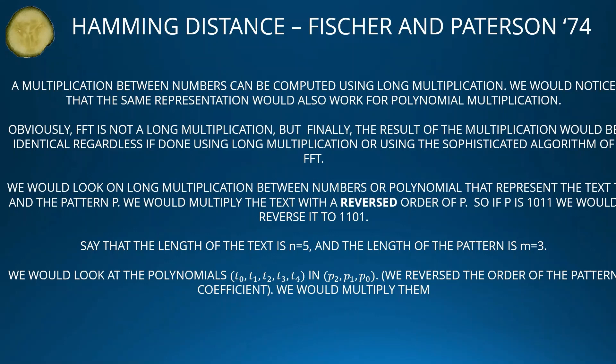We look at long multiplication between polynomials representing the text T and the pattern P. We multiply the text with a reversed-order copy of P — so if P is 1011 we reverse it to 1101. Say the length of the text is N = 5 and the length of the pattern is M = 3. We look at the polynomials T₀, T₁, T₂, T₃, T₄ and P₂, P₁, P₀, reversing the order of the pattern coefficients, and then multiply them.